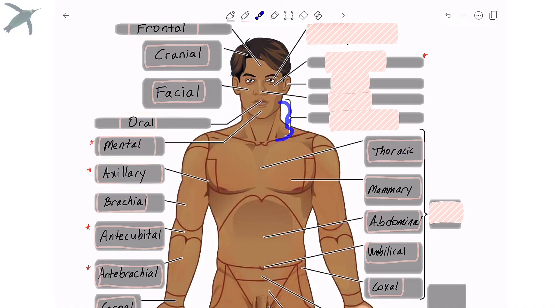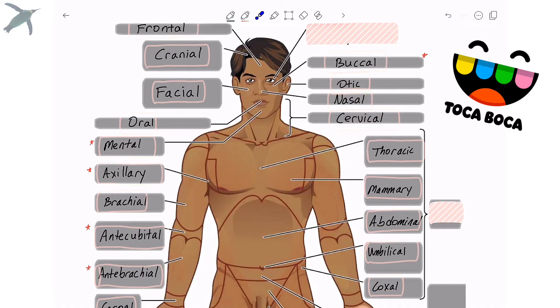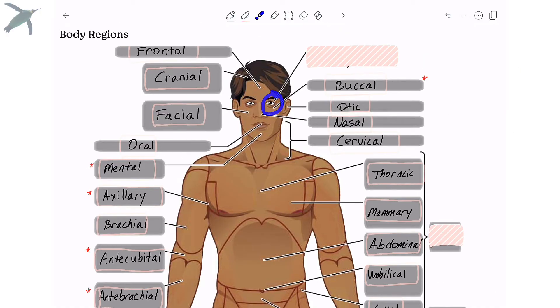This region here, what most people call the neck, is the cervical region. Your nose is the nasal region. The ear is the otic region. The cheek is the buccal region. If you know some Romance languages, you might know the term boca or bûche comes from the same root. And finally, the eye is the orbital or ocular region.